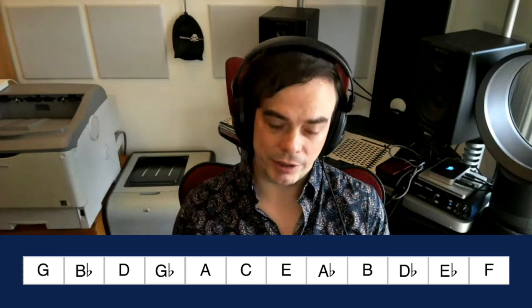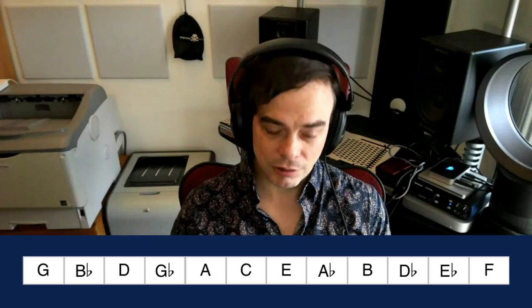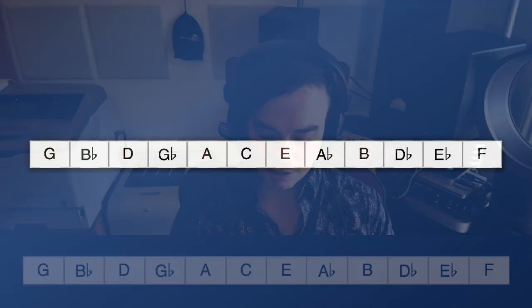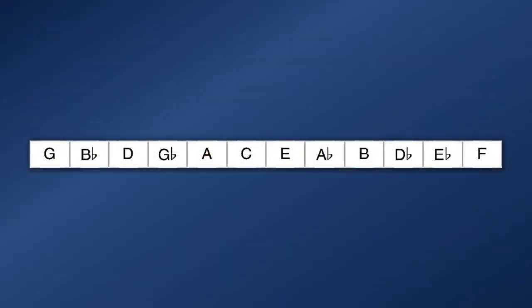This is from the Berg Violin Concerto, and this is the row that Alban Berg used. It famously has a series of triads built on the open strings of the violin. So you have G, B-flat, and D, a G-minor triad, and then overlapping D, F-sharp, and A.